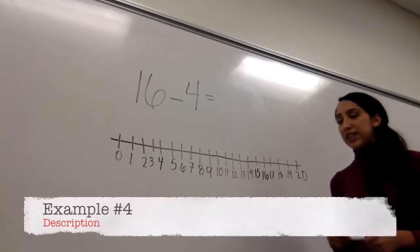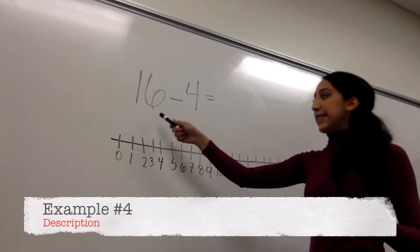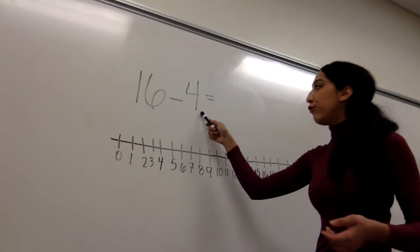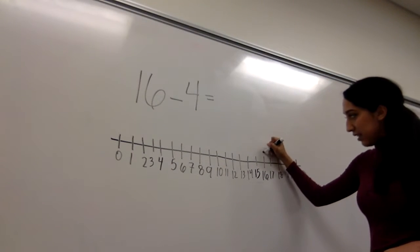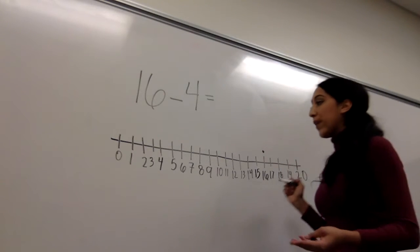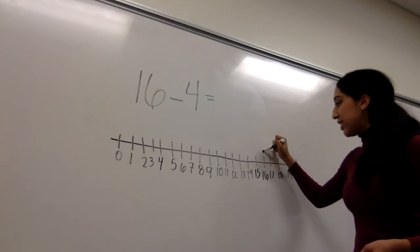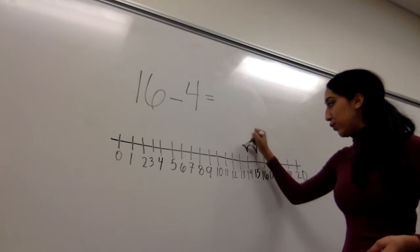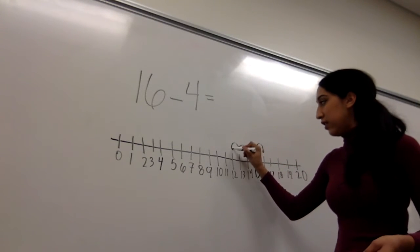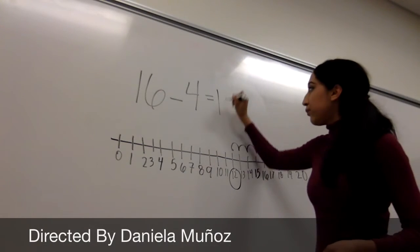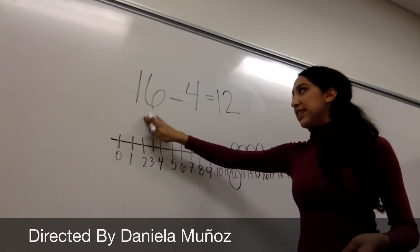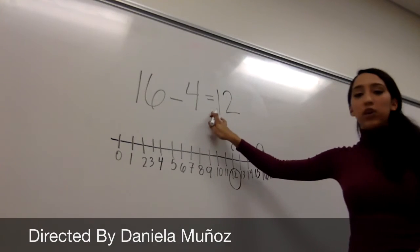So now we are doing a subtraction, 16 minus 4. So you will draw your dot at 16. And since it's subtraction, we're going backwards, which is 1, 2, 3, 4. And your answer is 12. So 16 minus 4 equals 12.